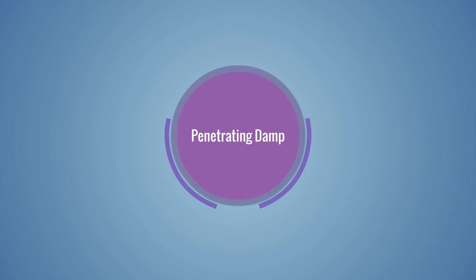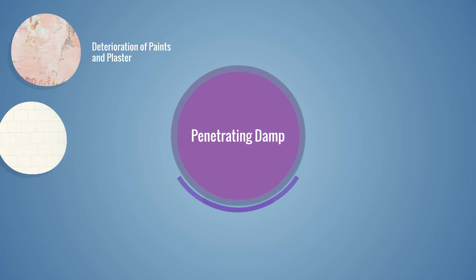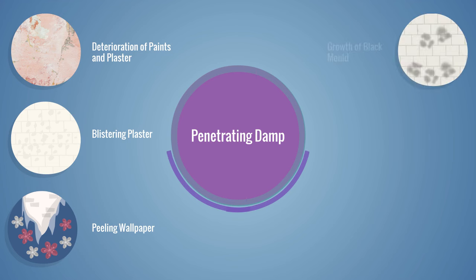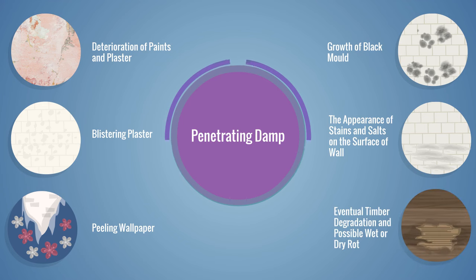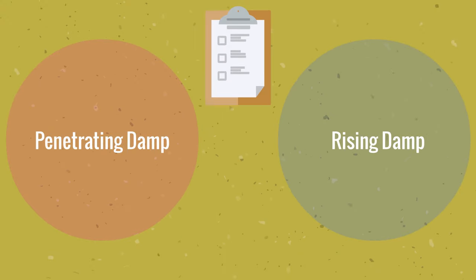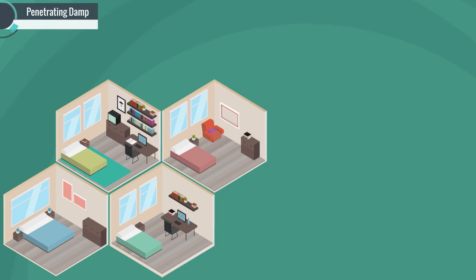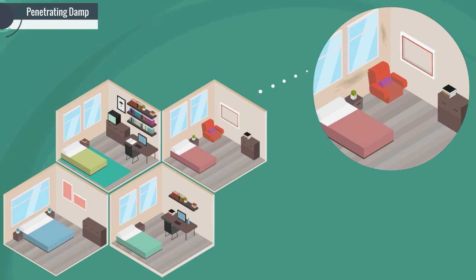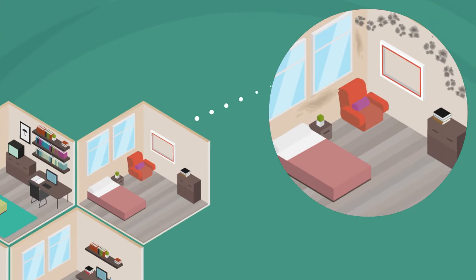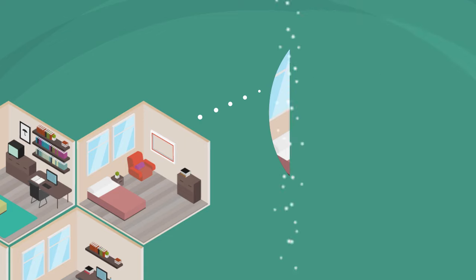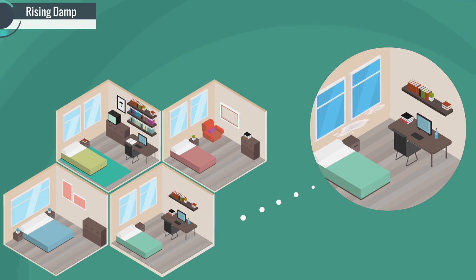Other things to look out for with penetrating damp include deterioration of paints and plaster, blistering plaster, peeling wallpaper, growth of black mold, the appearance of stains and salts on the surface of the wall, and eventual timber degradation and possible wet or dry rot. However, there are a couple of key differences that can help you distinguish between the two. Penetrating damp can attack any floor in the property, and frequently you can observe water damage around the affected area on the external wall where the water ingress is occurring. You may also get mold growth if the wetting of the surface causes it to become a cold condensing surface. Rising damp will only affect ground floor walls, and its signature tide mark damp staining will be up to a meter high up the wall.